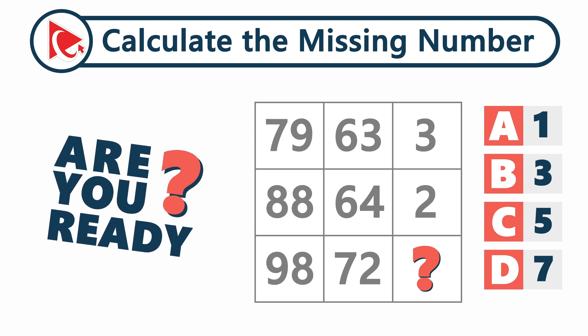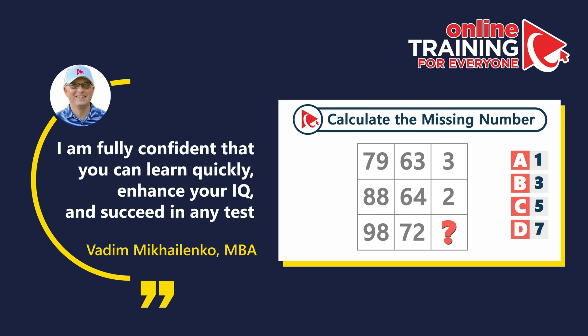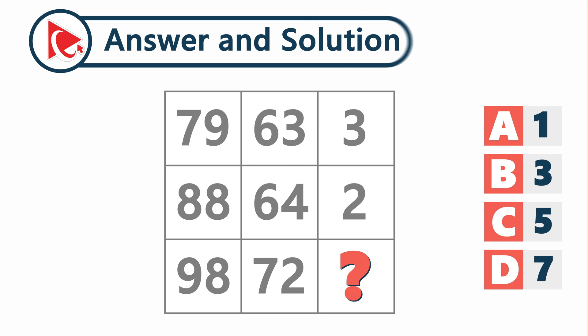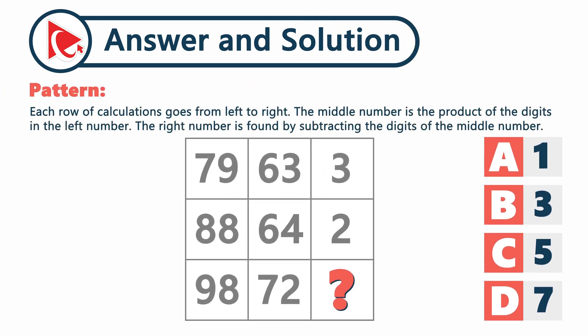Are you prepared to share your answer? And don't worry — even if you didn't get it right, you might be surprised by how simple the solution actually is. Remember, I told you that the calculations here go from left to right. The middle number is the product of the digits of the left number, and the right number is found by subtracting the digits of the middle number.